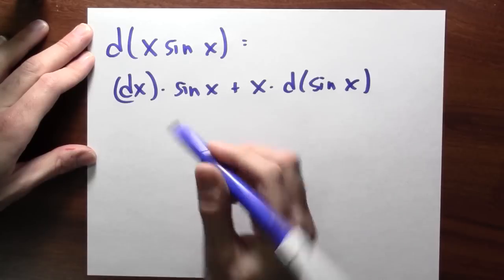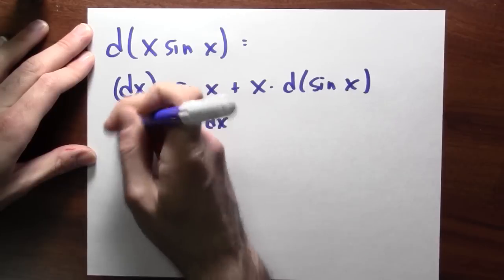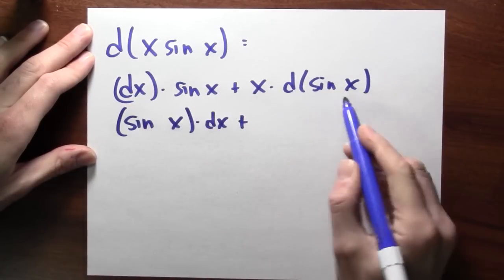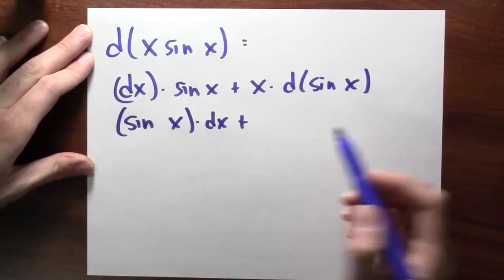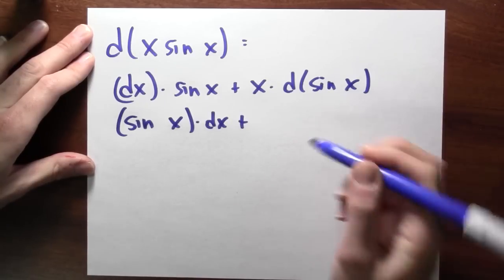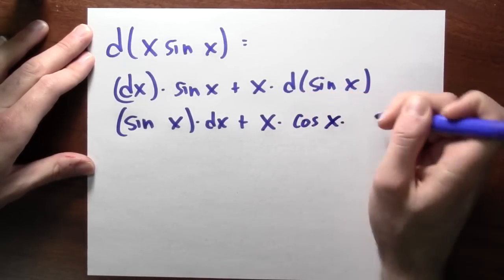Now, instead of writing dx times sine x, I could write that as sine x dx. And what's d of sine of x? Well, this is d of a function. And remember, how do I take d of a function? Well, it's the derivative times dx. So this is x times the derivative, which is cosine x times dx.